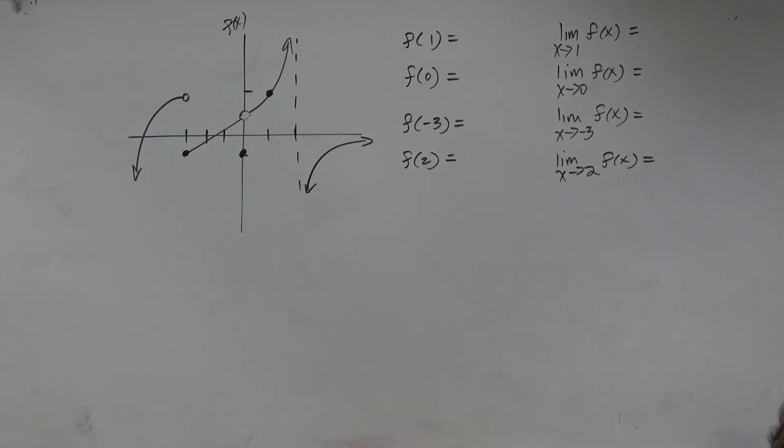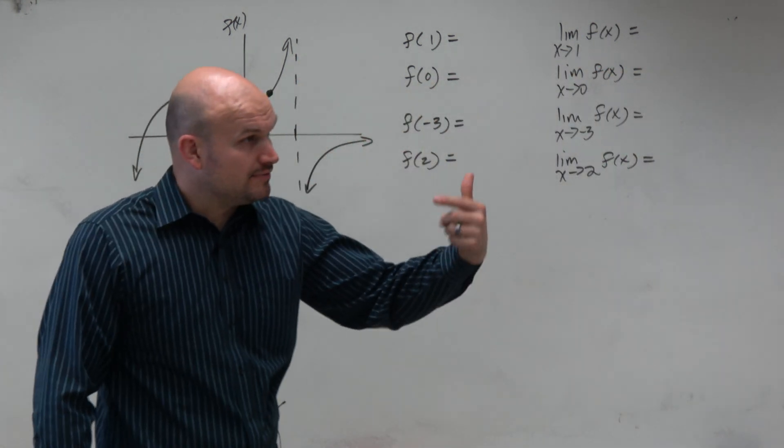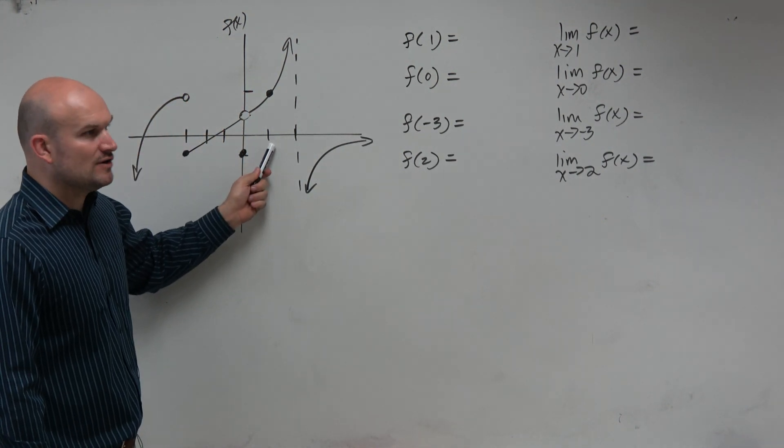So if I was given this graph, let's just kind of do one by one. If I said what is f of 1, that means we're looking for the value of the function at f of 1. So we go to 1, and we say, what is the value of the function?